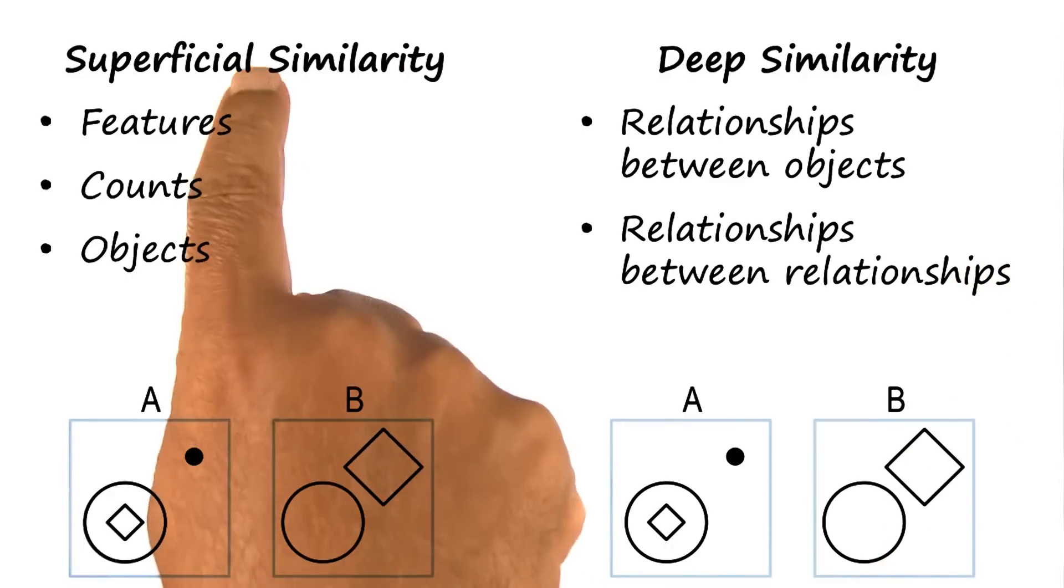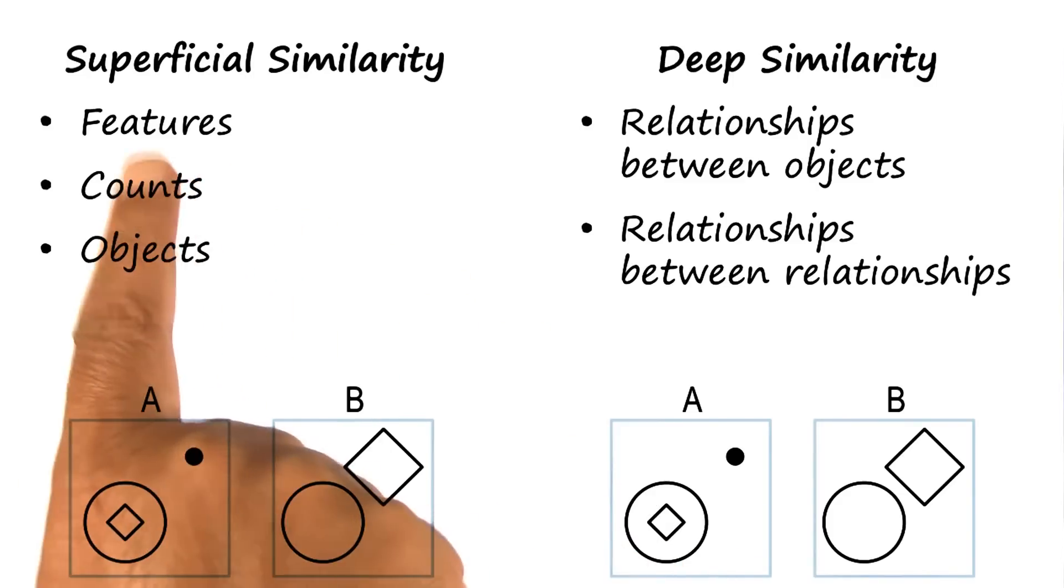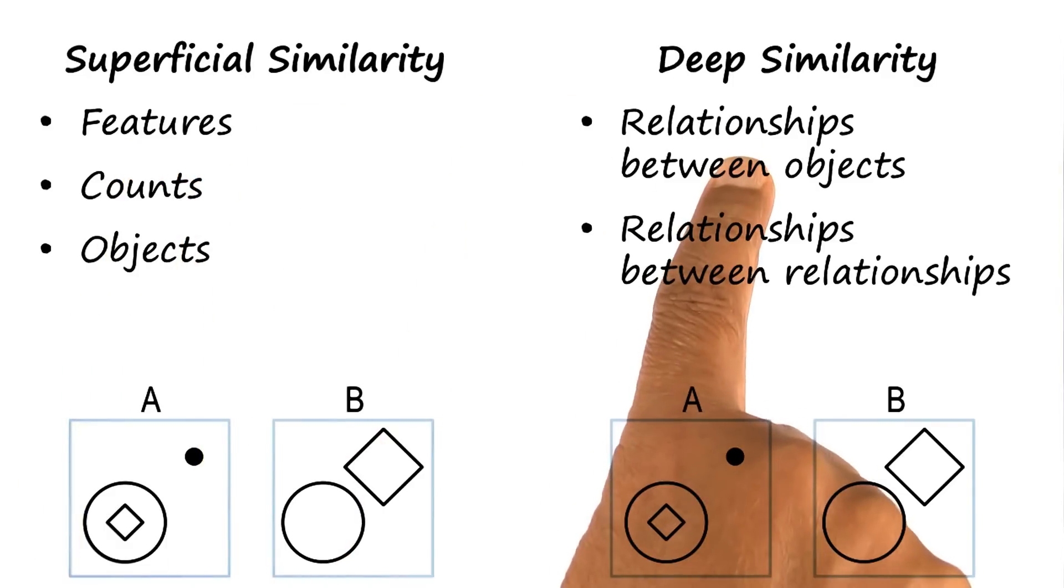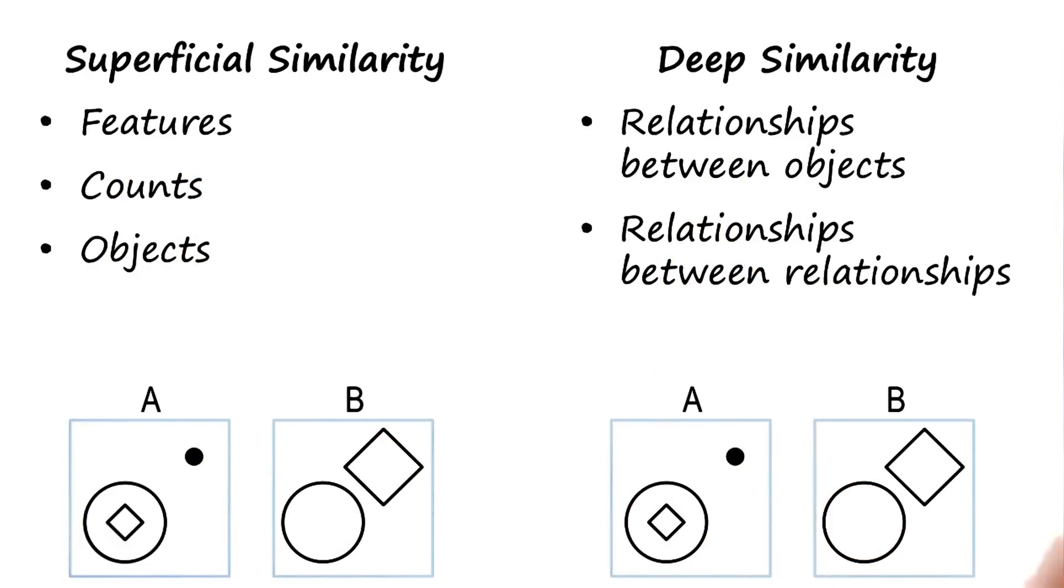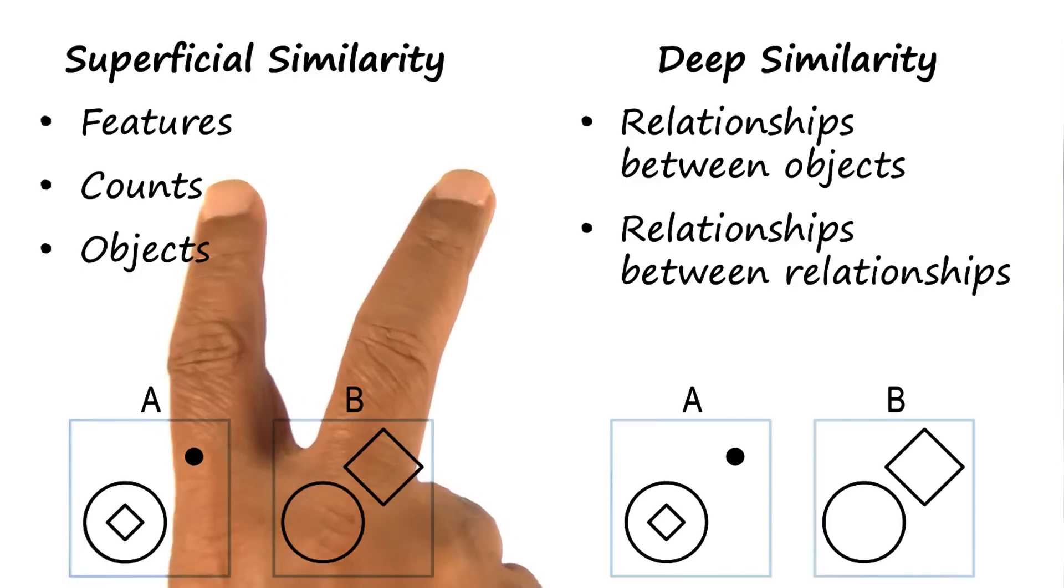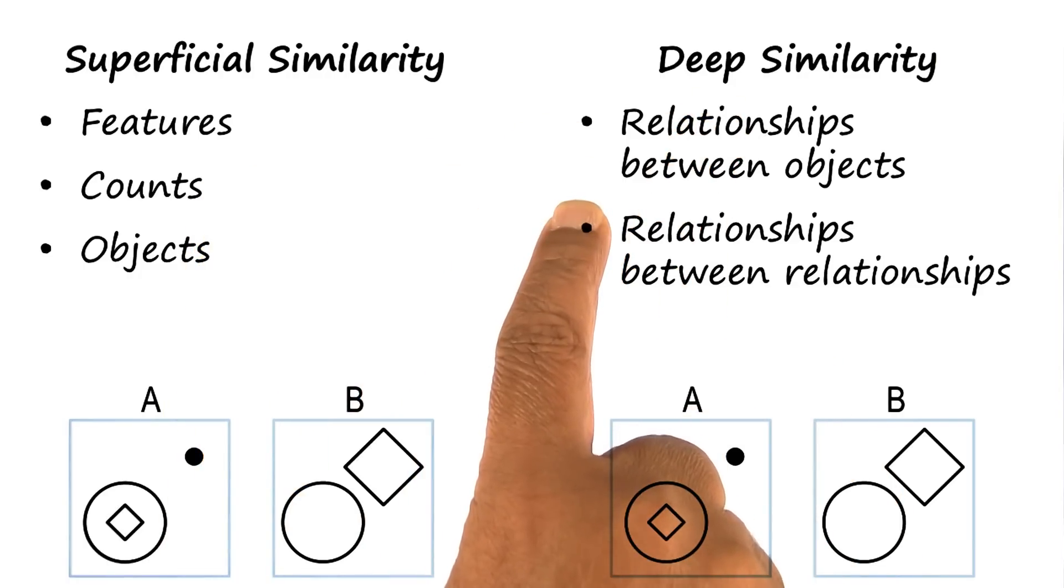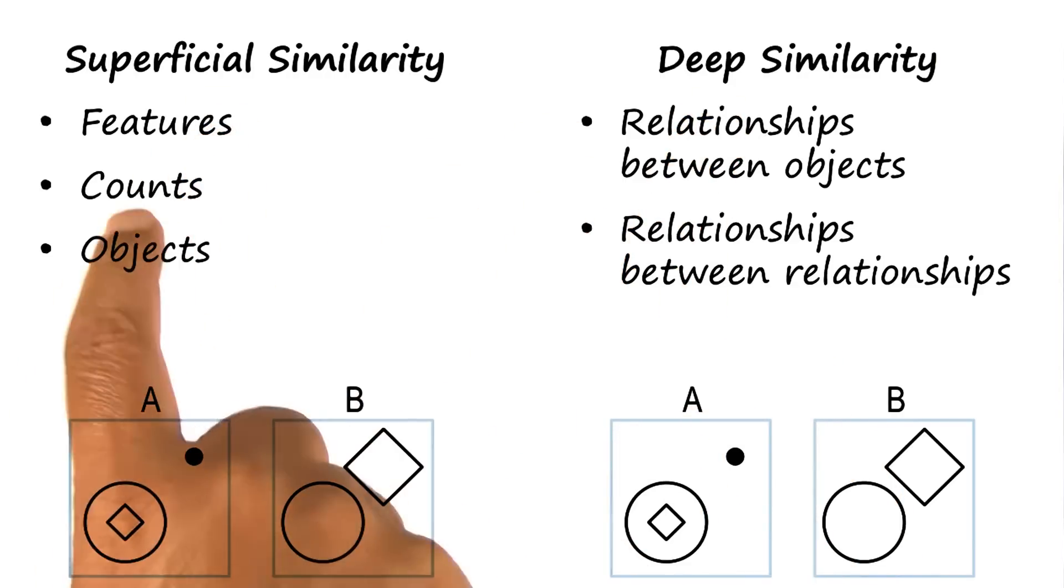You might even say that these are examples of unary relationships. These are just examples of objects and their features and counts. In general, as we go from unary relationships to binary relationships to tertiary relationships to even higher order relationships, the similarity becomes deeper and deeper. This means that mind decides two situations to be more similar if the similarity is at the level of relationships between objects, rather than simply at the level of objects or features or counts of objects.